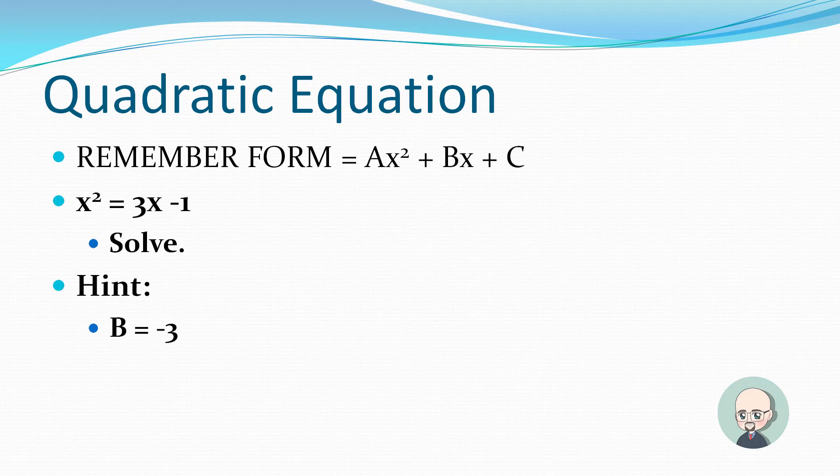Remember the form: ax squared plus bx plus c. If we're given x squared equals 3x minus 1, solve it using the quadratic formula. Hint: b equals negative 3. Pause the video now to try it yourself.